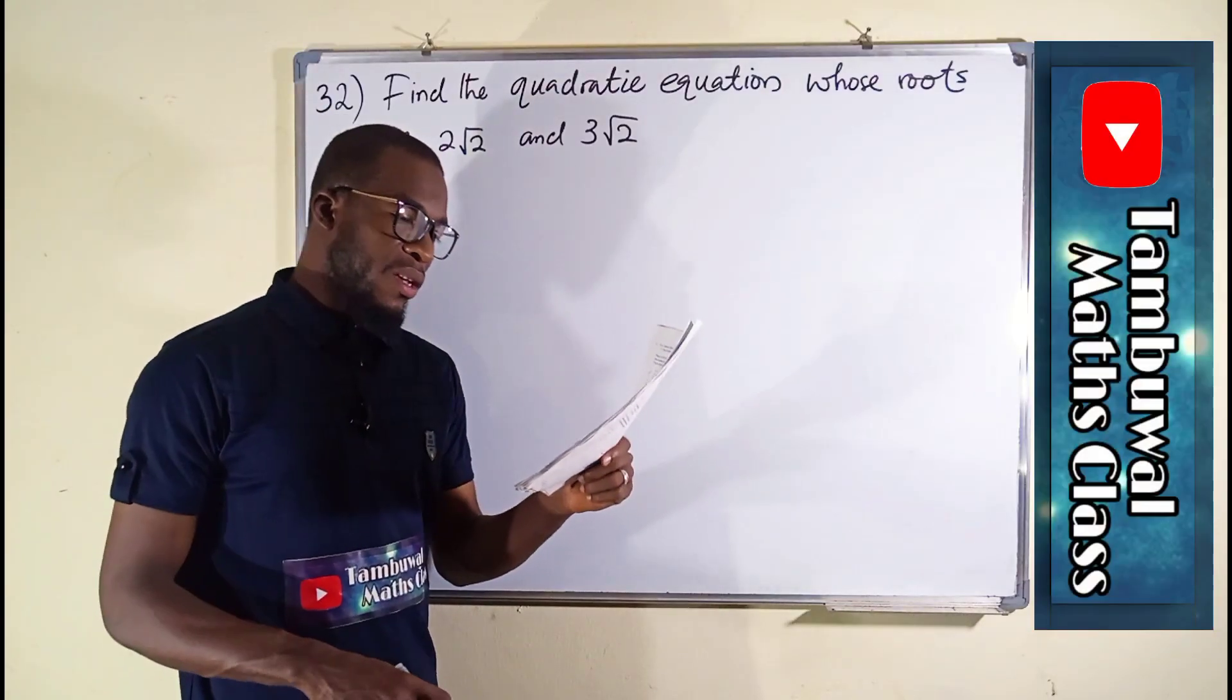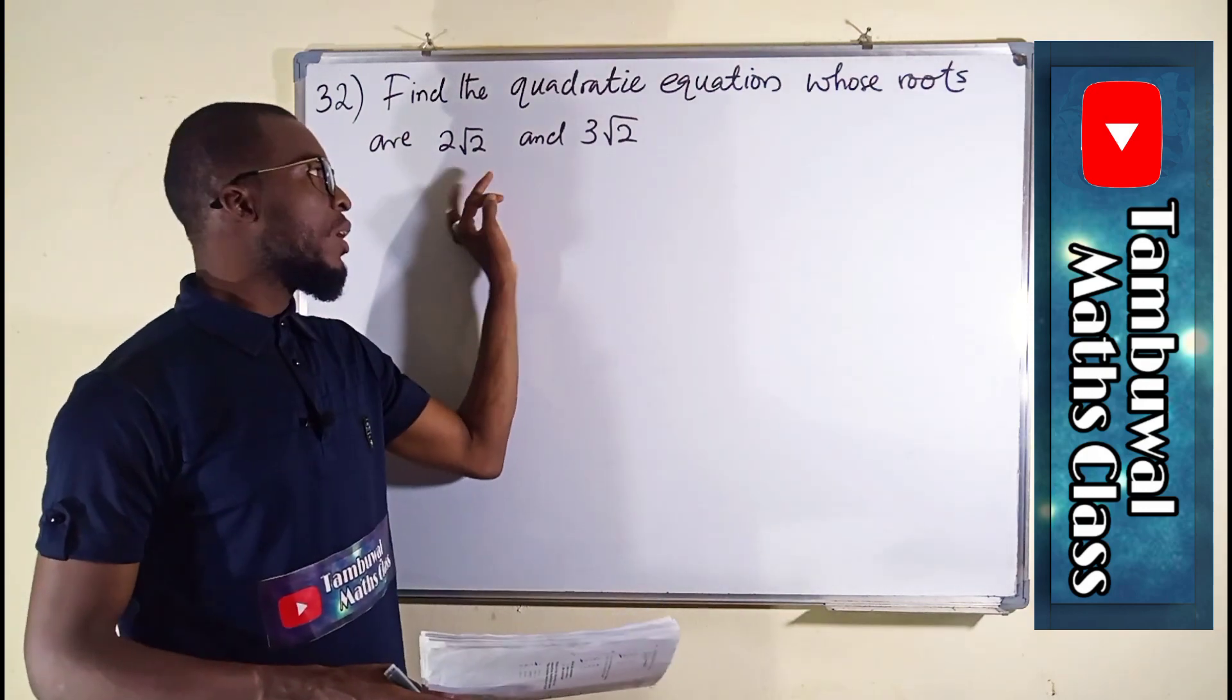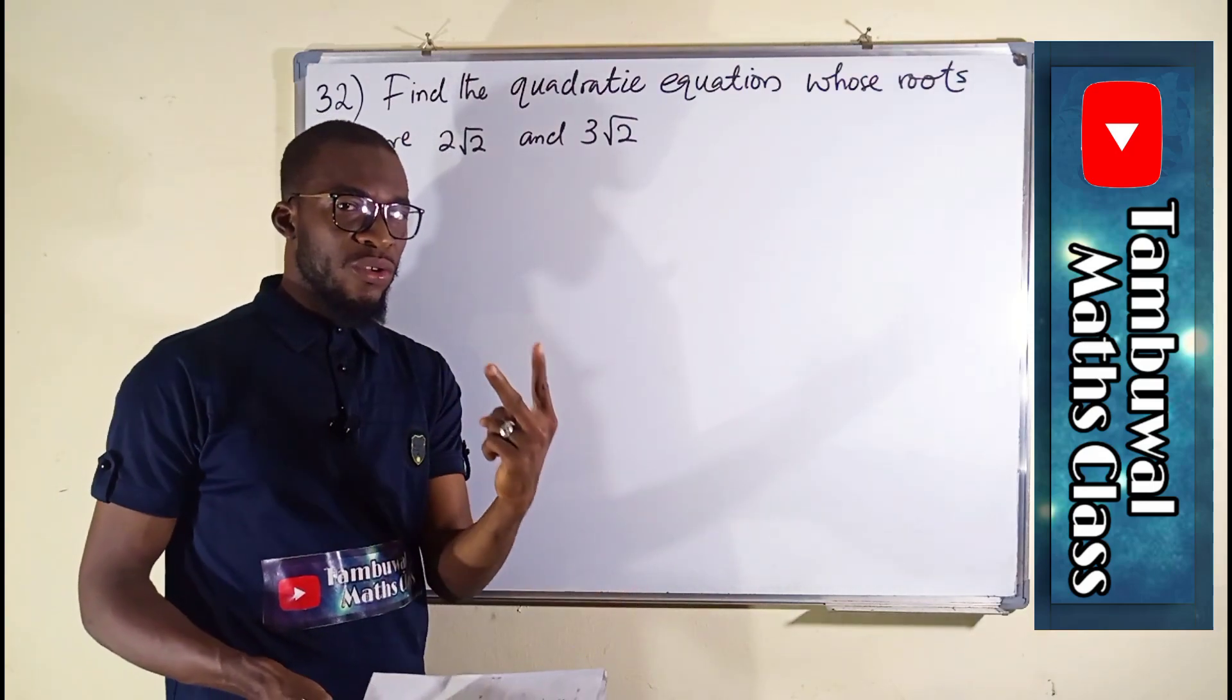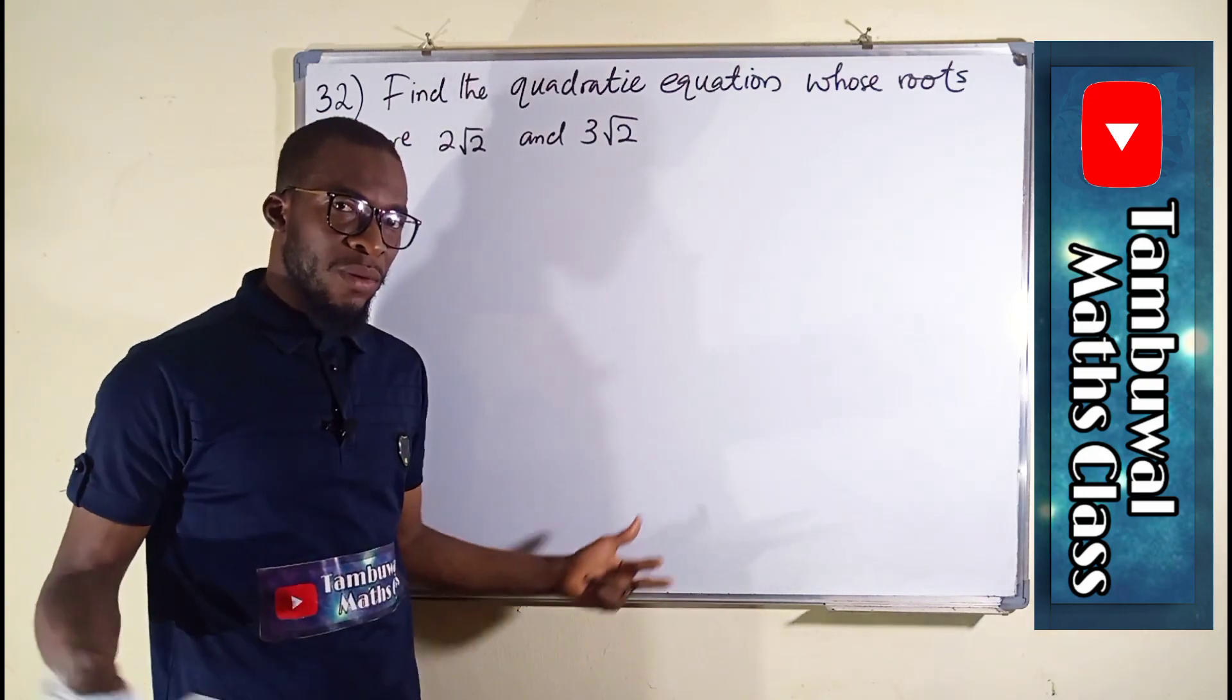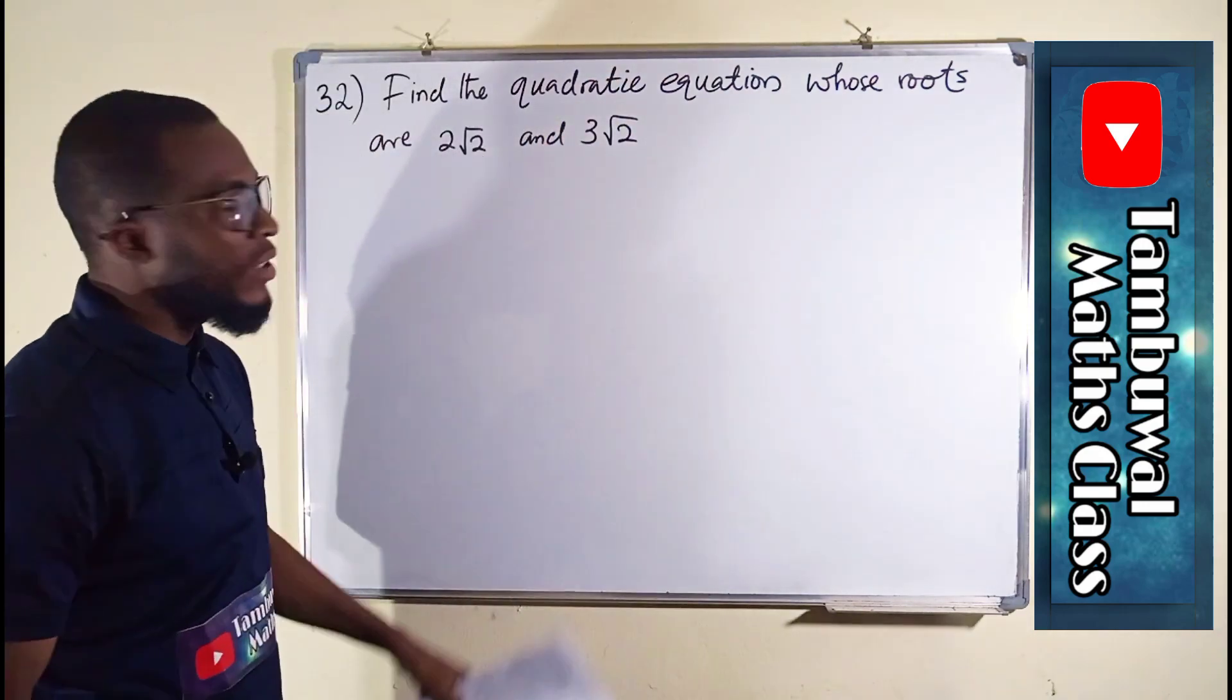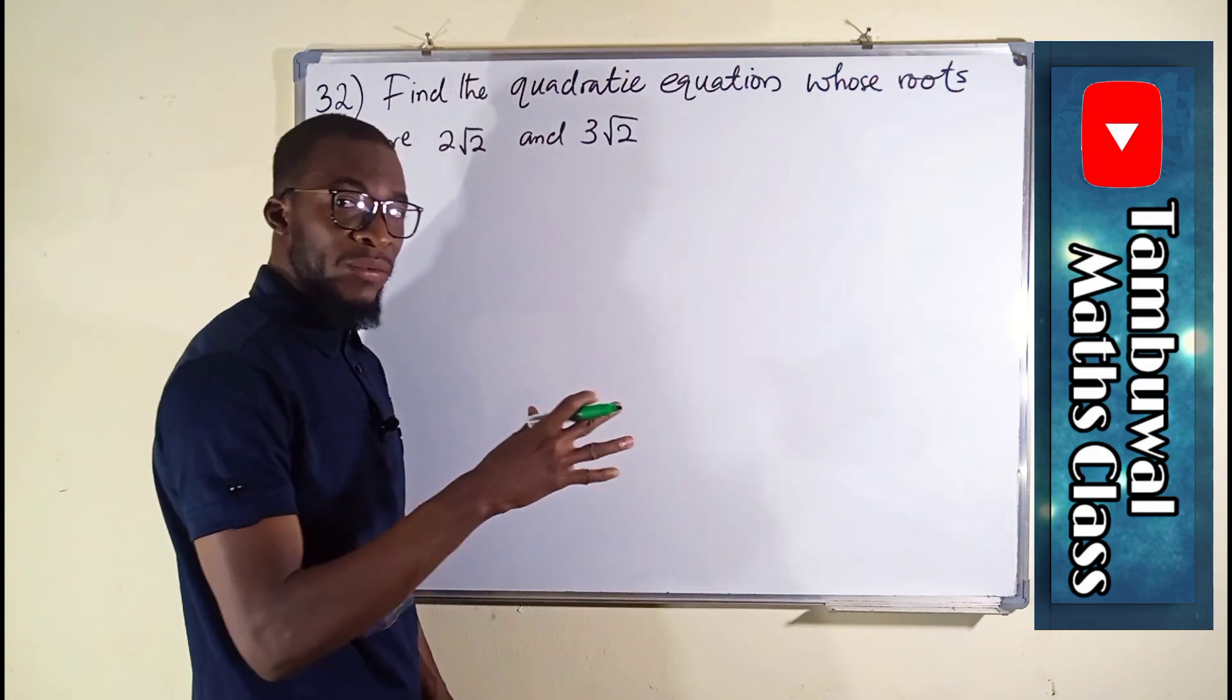Question number 32 says we should find a quadratic equation whose roots are 2√2 and 3√2. Remember, whenever you solve a quadratic equation, you normally obtain two results. So those two results, we can reverse them back to the original equation. That's what we are about to do here. Remember, whenever you solve a quadratic equation, you normally obtain the corresponding values of x for the independent variable.